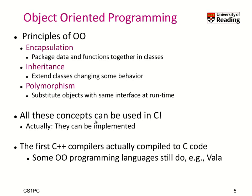What we learned in object-oriented programming covered encapsulation — packaging data and functions together in classes — inheritance to extend and modify derived classes, and polymorphism allowing substitution of objects with the same interface at runtime. In fact, all these concepts can be implemented in C. Early C++ compilers actually compiled C++ code into C code, which was then compiled with existing C compilers.